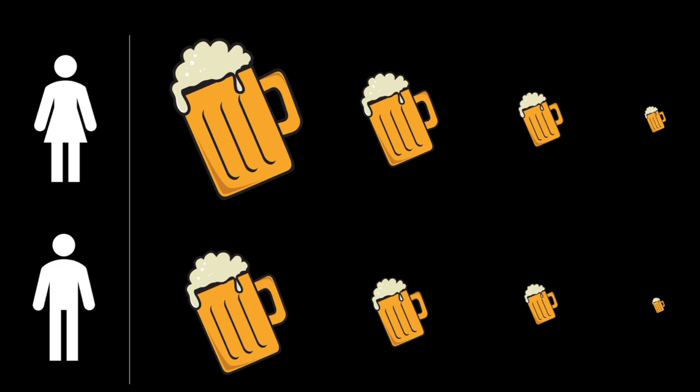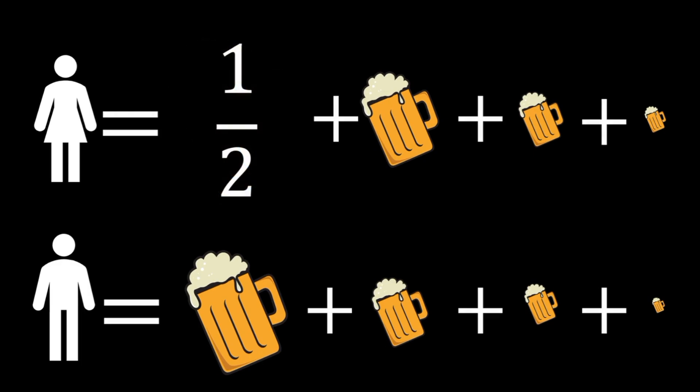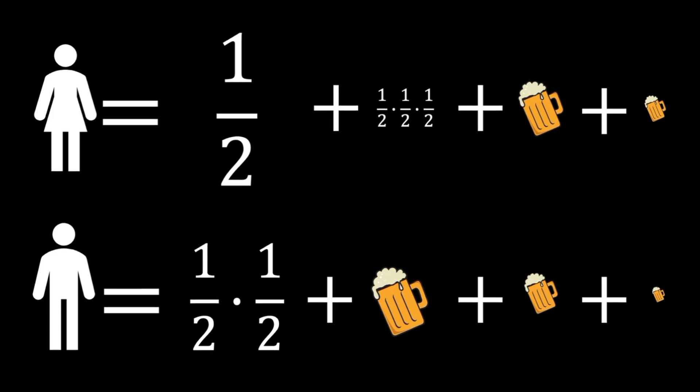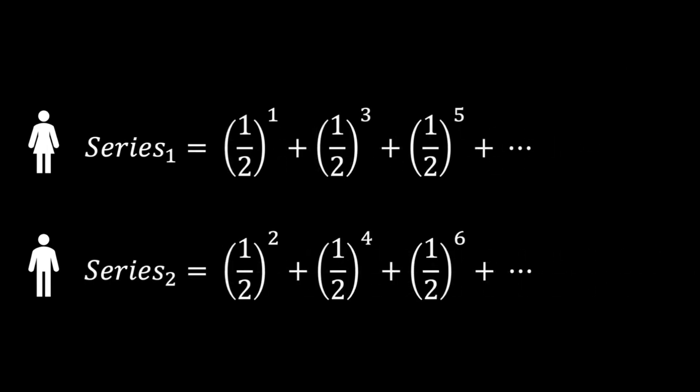Clearly, how much each of you drink is the sum of the portions drank. So let's start placing some fractions in. Since your date started, she gets half, you get half of the remainder, and so on. Our answers are hence the sum of the series as follows. Tidying it up, we get the following.